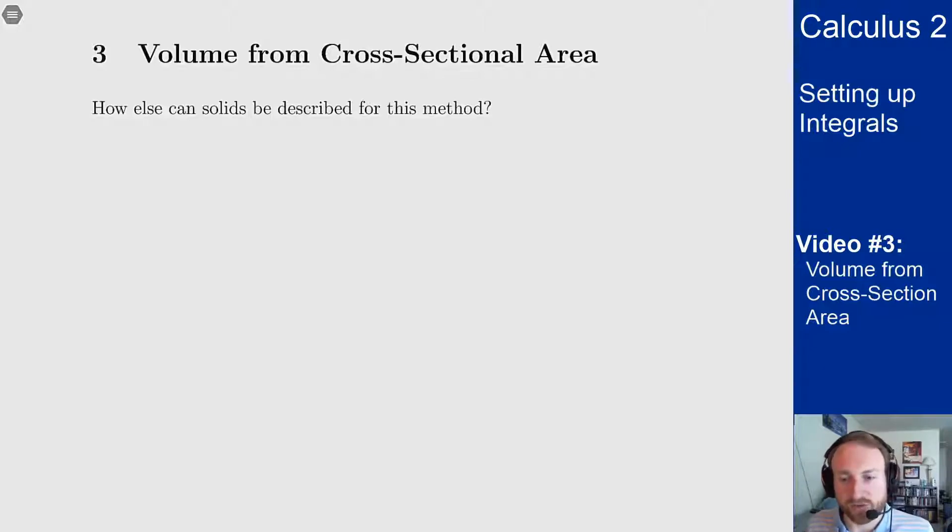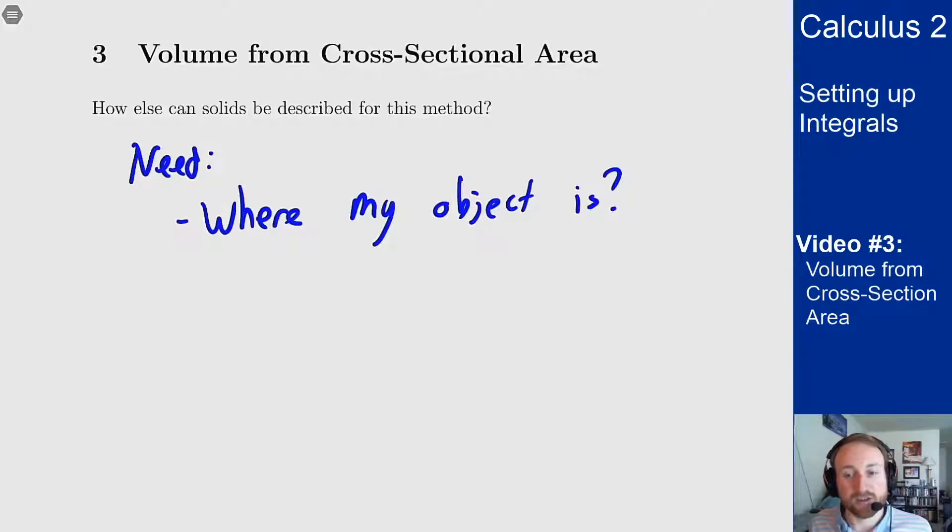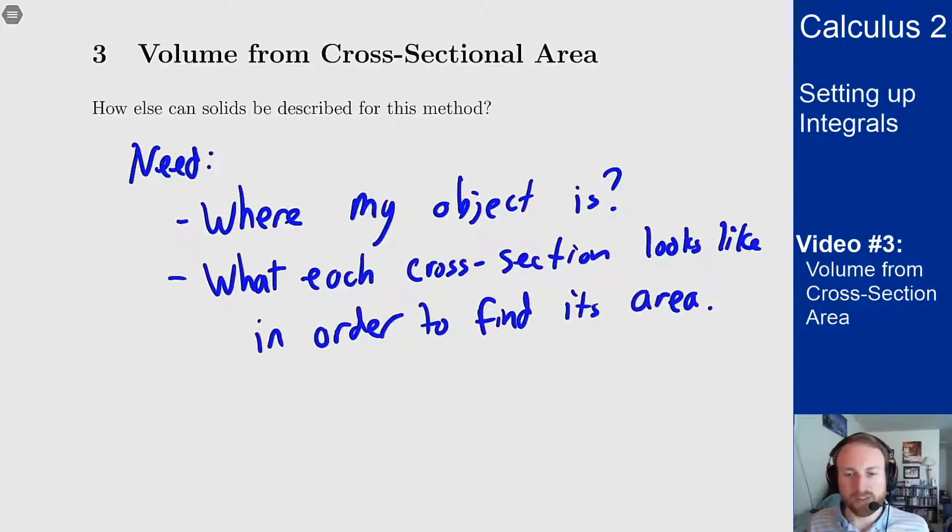So how else can I describe objects so that method will still be applied? Well the main things I needed were to know where my object was and what each cross section looks like in order to find its area. That's really all the information we need to solve these sorts of problems.